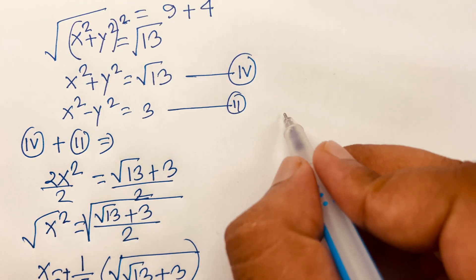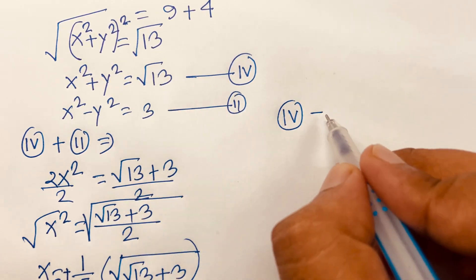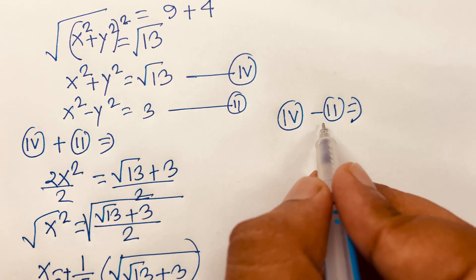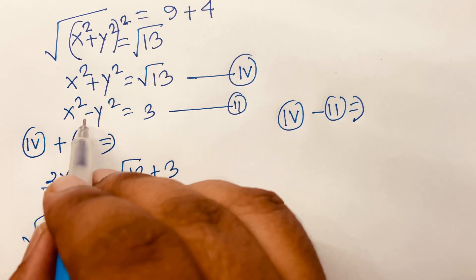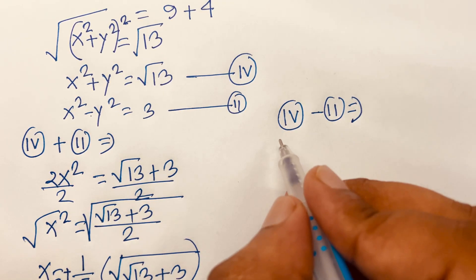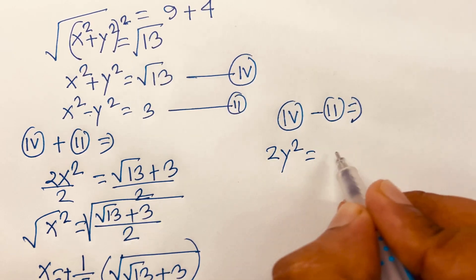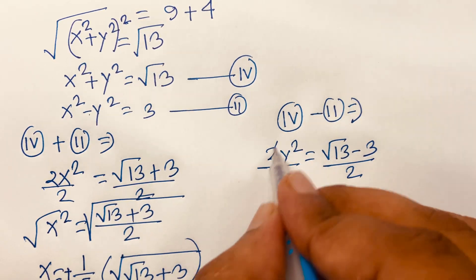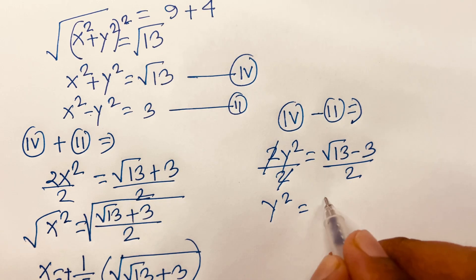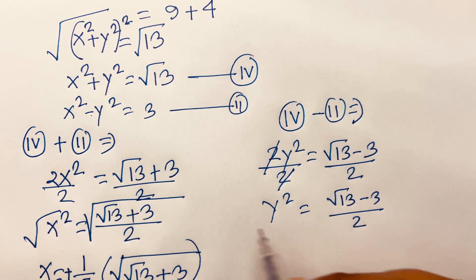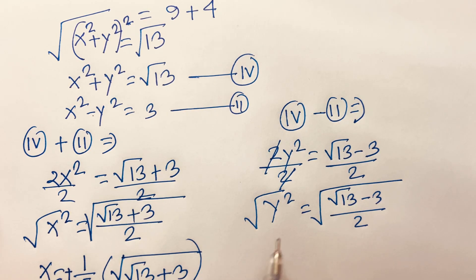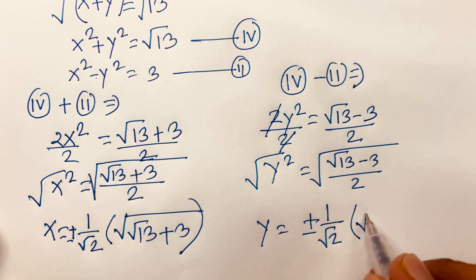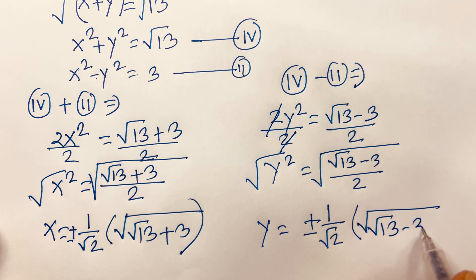Now for y: equation 4 minus equation 2. The x² terms cancel to 0, and y square minus minus y square gives 2y², so 2y² equals √13 minus 3. Dividing both sides by 2, y² equals (√13 minus 3) over 2. Taking the square root, y equals plus or minus (1 over √2) times √(√13 minus 3).